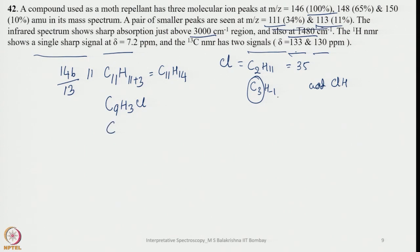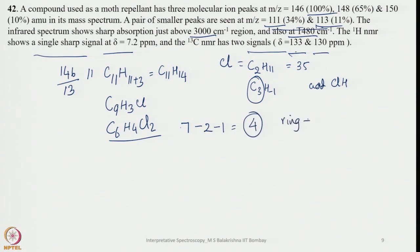Assuming the formula C6H4Cl2, let us calculate the hydrogen deficiency index: (6+1) − (4/2) − 1 = 7 − 2 − 1 = 4. A deficiency of 4 means 1 ring plus 3 double bonds, which fits perfectly into an aromatic benzene ring.